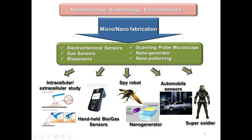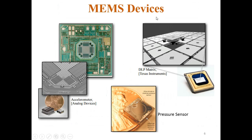Some small applications of MEMS include electrochemical sensors, gas sensors, biosensors, scanning probe microscopes, nano generators, and nano patterning. Examples of MEMS devices include a very small accelerometer, a DLP matrix, and pressure sensors. The size of these devices is extremely small — in the micro to nano range — as we can see from the figures comparing them to a point.